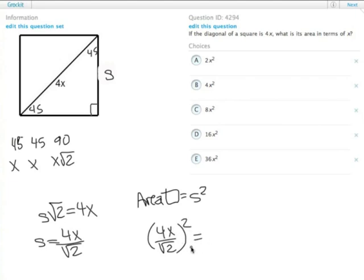So 4x times 4x gives us 16x squared. The square root of 2 times the square root of 2 gives us 2.